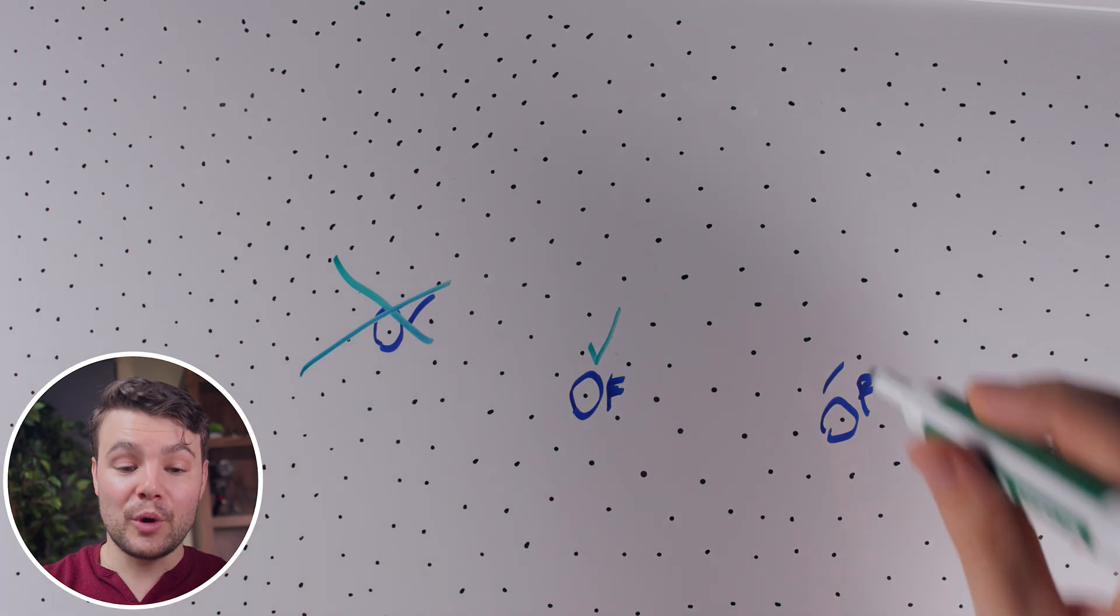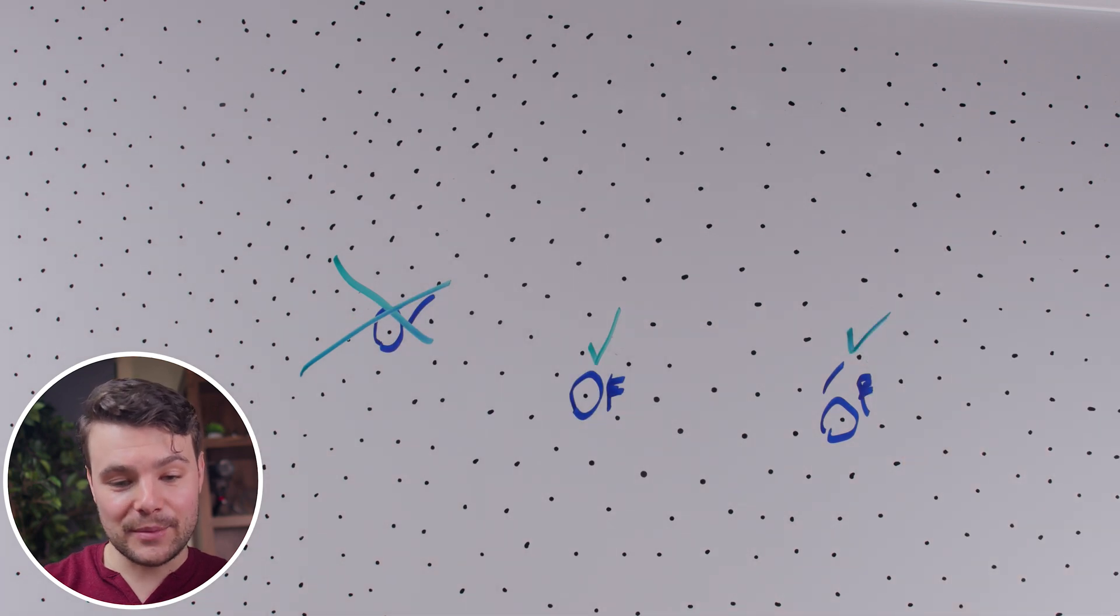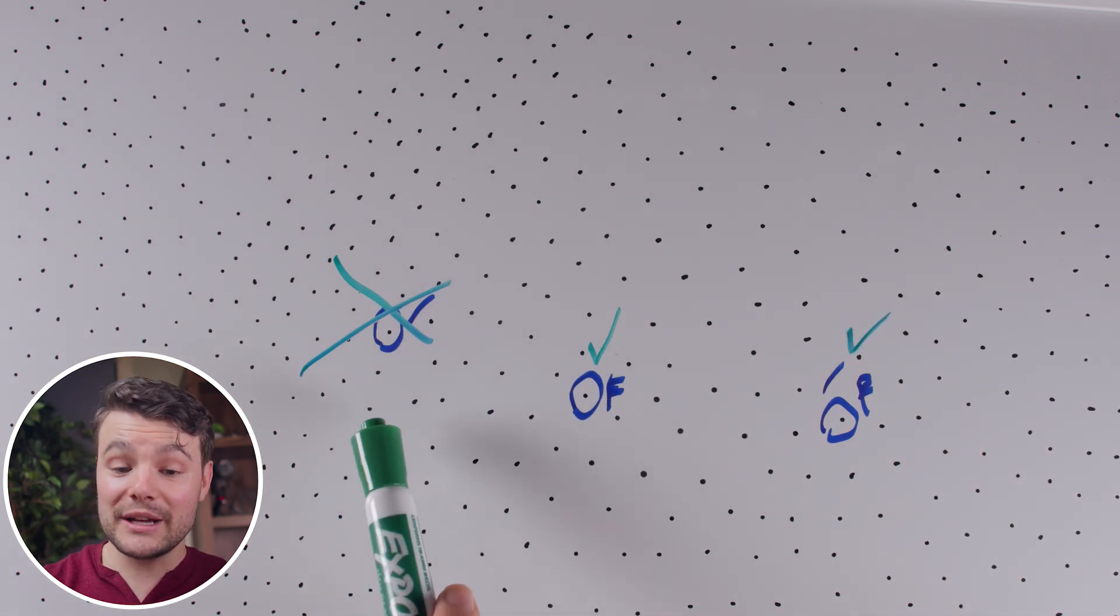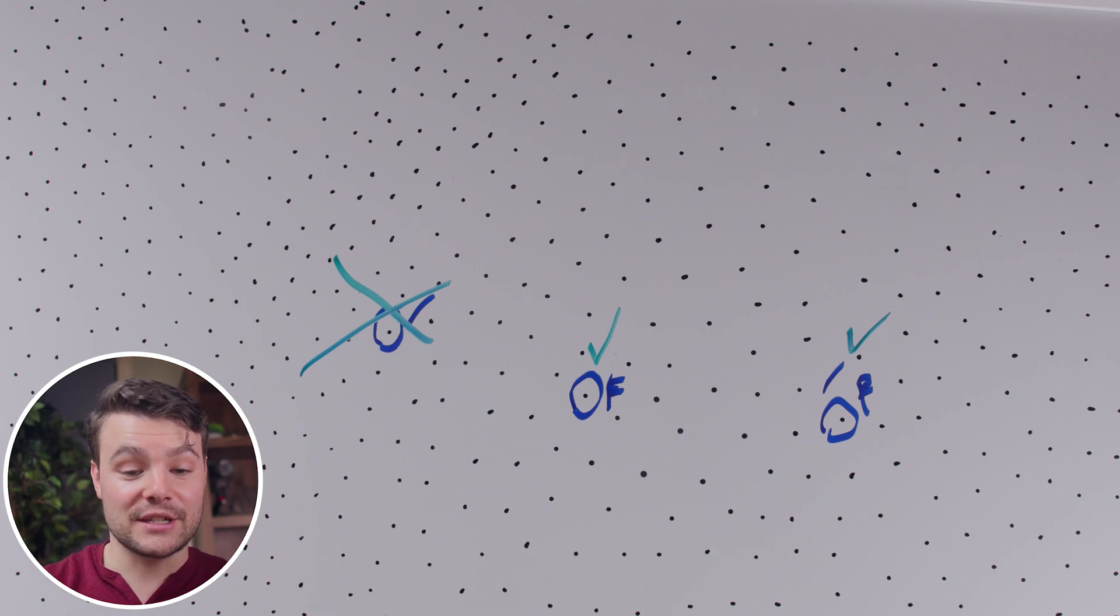These people bought the toothbrush, they will both register as a successful custom conversion. This person who only bought the floss will not register as a successful custom conversion.